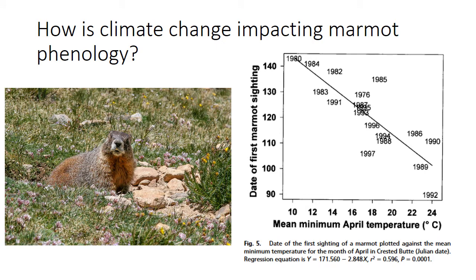Looking at marmots, we can examine the relationship between the date of first sighting and the mean minimum April temperature — the end of winter, beginning of spring. As that minimum temperature has increased, marmots come out earlier, suggesting a direct response of hibernation end to increasing temperatures. But the question is how are the plants responding? When marmots emerge from hibernation, they're going to be hungry and need to eat something.